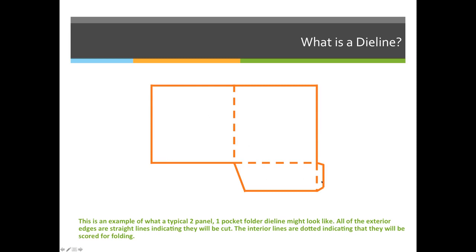It also has a glue tab because this glue tab will fold in and up to create the pocket. The outside lines are straight lines because we will have a straight cut to create that form, and the inside lines are dashed lines representing a scoring fold.